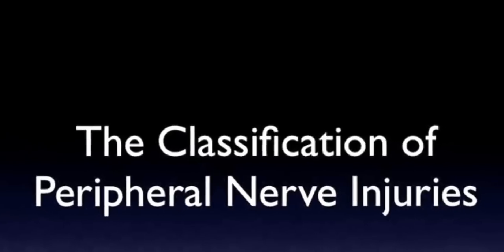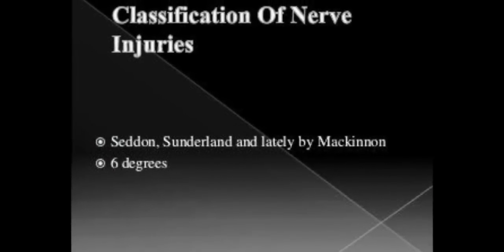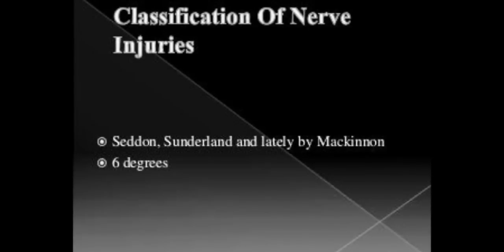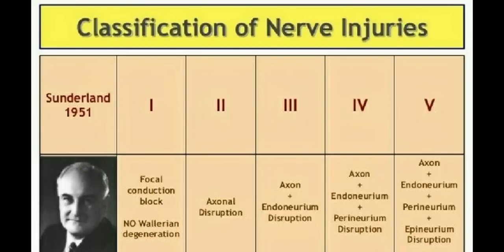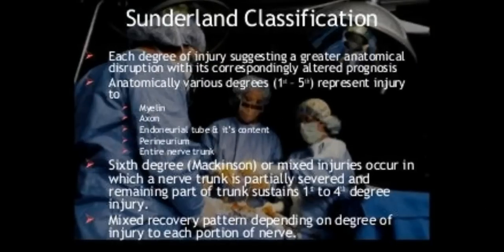Now we'll move towards the classification of peripheral nerve injuries, the most important topic. It includes the Sunderland classification, introduced in 1951, and later the McKinnon classification with six degrees. In the first degree, focal conduction block occurs with no Wallerian degeneration. In the second degree, axonal disruption occurs. In the third degree, axon plus endoneurium disruption occurs. In the fourth degree, axon plus endoneurium and perineurium disruption occurs. In the fifth degree, axon plus endoneurium, perineurium, and epineurium disruption occurs. Each degree suggests greater anatomical disruption with a correspondingly altered prognosis.